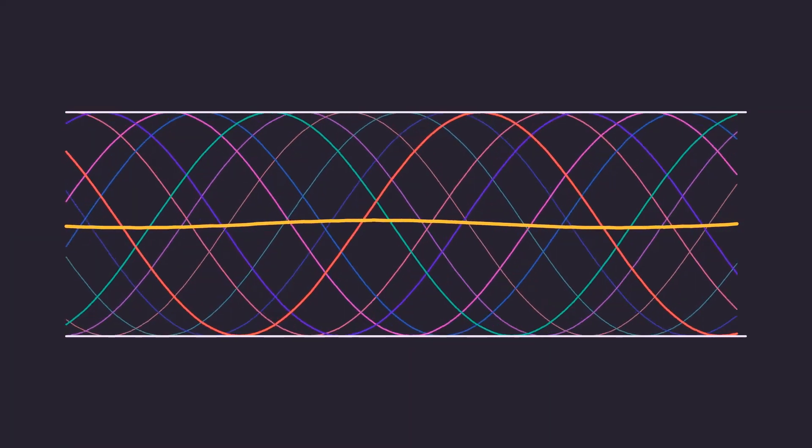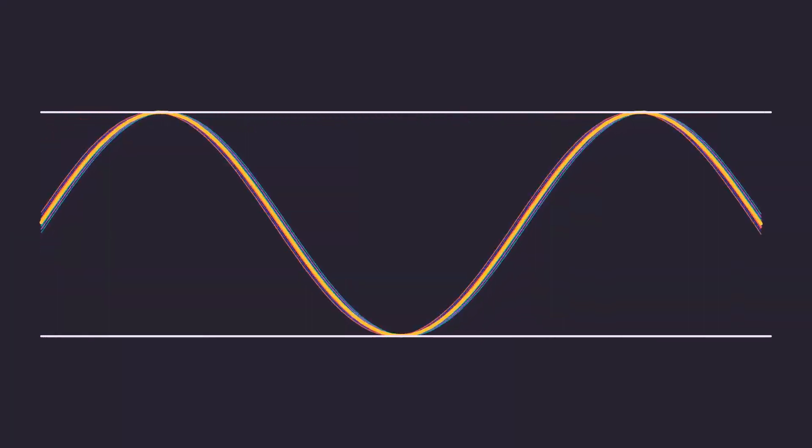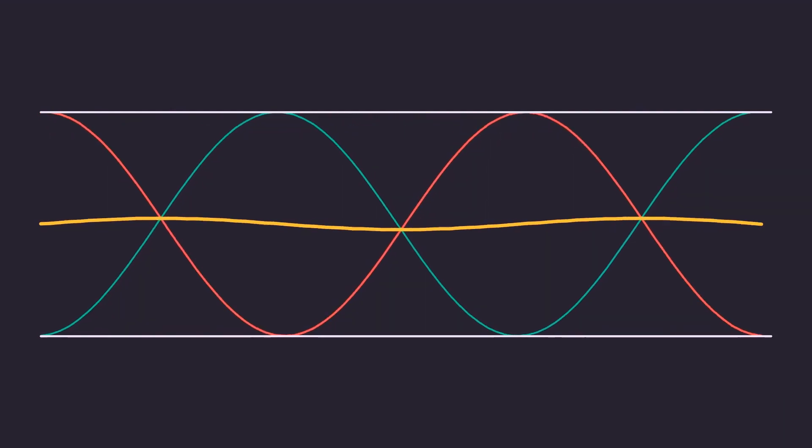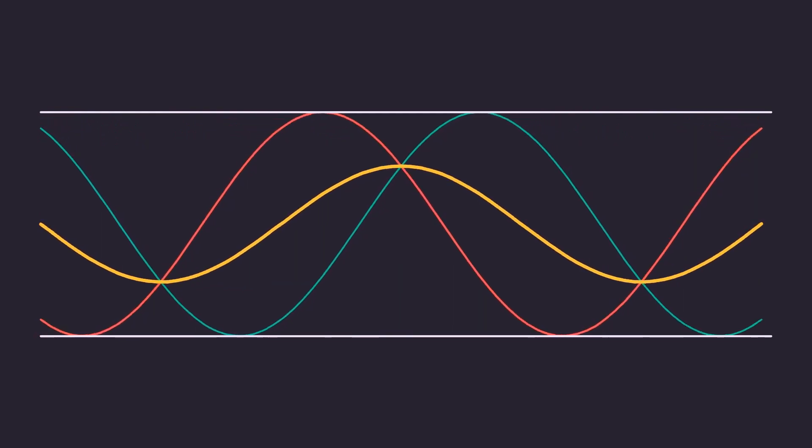But if the length of the pipe is changed by just a little bit, the waves all collapse into two traveling waves. At this particular length and with this particular frequency, we get resonance.